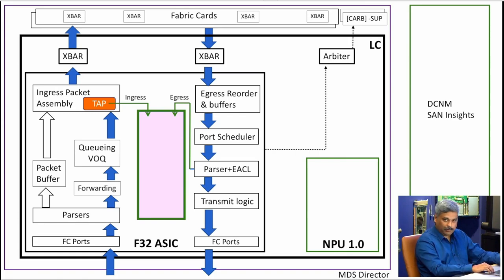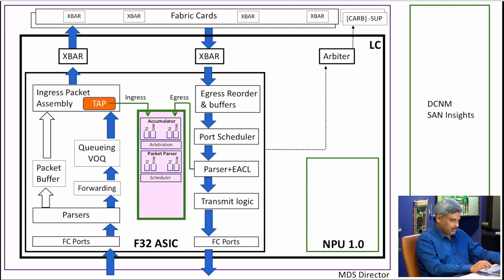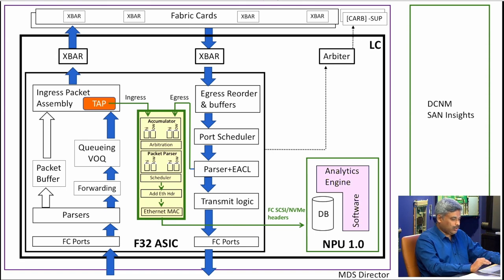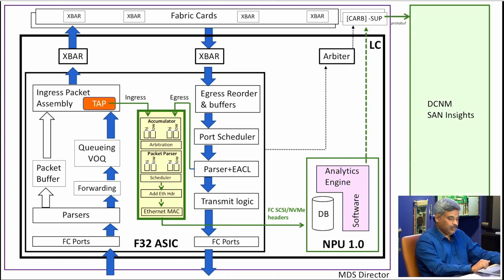Once the packet is tapped, a copy is sent into the analytics engine. The packet is tapped from both the ingress and egress paths, which is required to correlate the packets of a full exchange — unlike in the Ethernet world. The tapped packets go through scheduling priorities and then out through an Ethernet link onto the onboard NPU. The NPU has the database, correlates packets from both ingress and egress, forms a full picture of an exchange, and computes metrics. It supports a hierarchical view at the exchange, initiator-target, or initiator-target-LUN level.